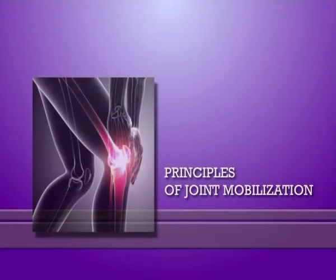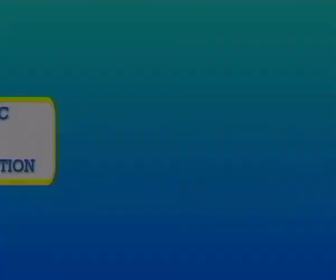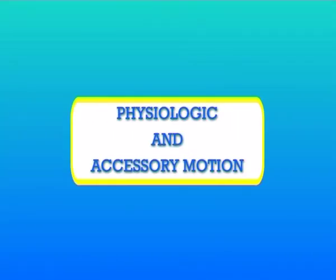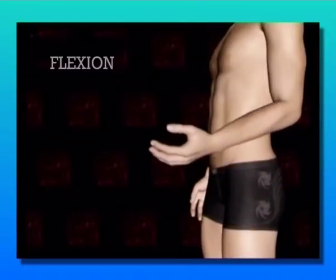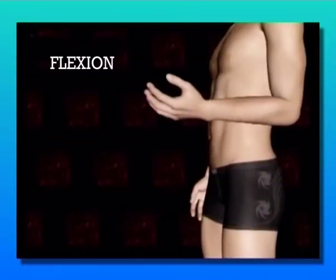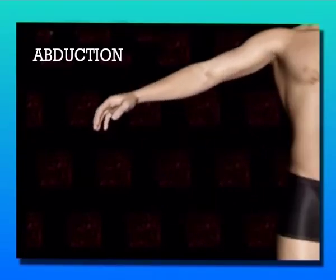Here comes the principles of joint mobilization. First are physiologic or accessory motions. Physiologic motion is the normal active motion that is available at any synovial joint. Another way to describe physiologic motion is the motion that occurs in the cardinal planes. Examples include flexion, abduction and internal rotation.